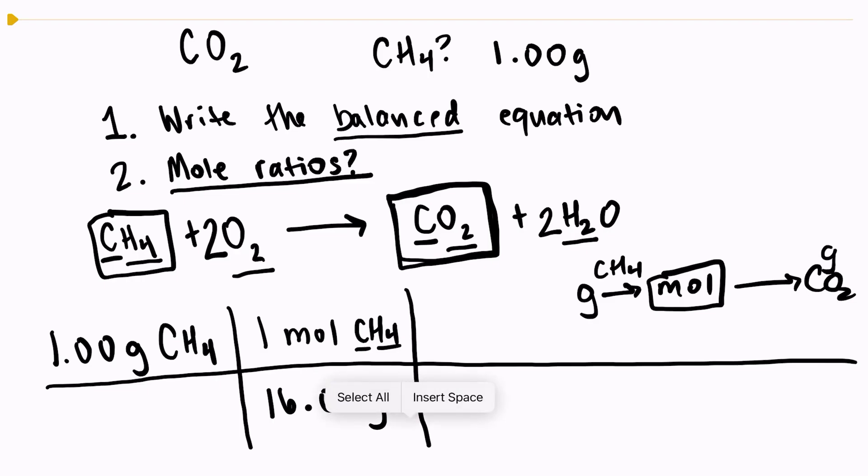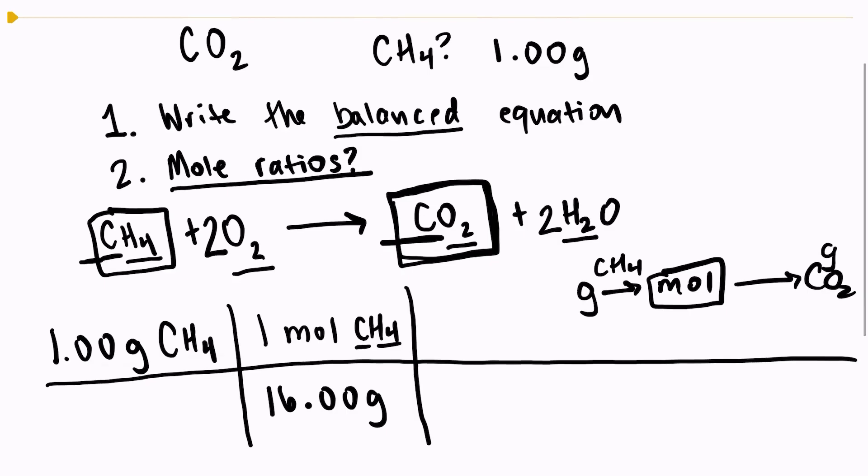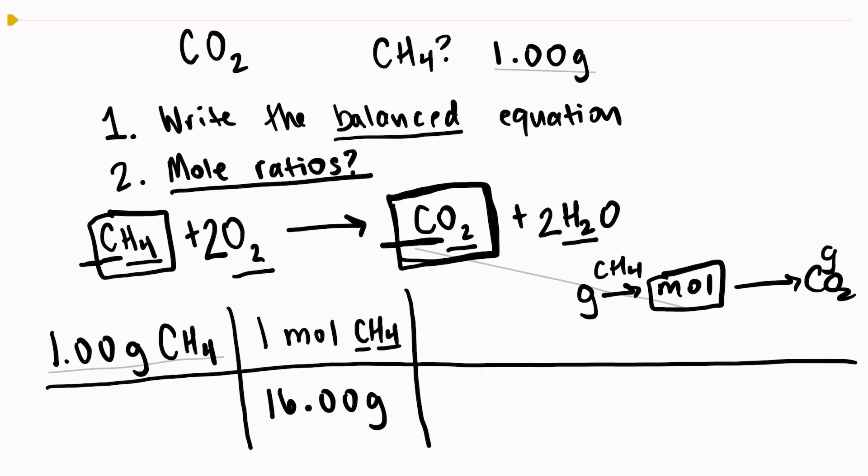Notice my coefficient in front of CH4, there's not one there. And my coefficient in front of CO2, there's also not one there. When you don't see a coefficient, that means that really the coefficient of one is there. But we never write a one as just common practice. So for every one mole of CH4, I produce one mole of CO2.